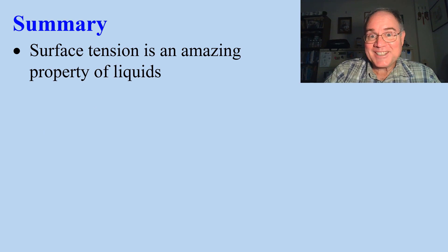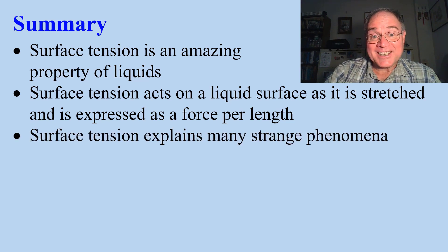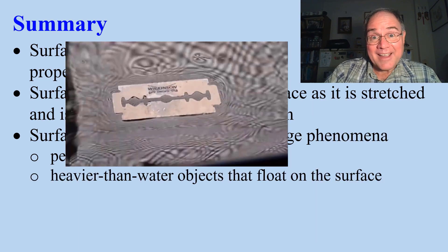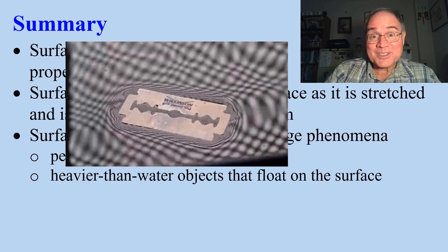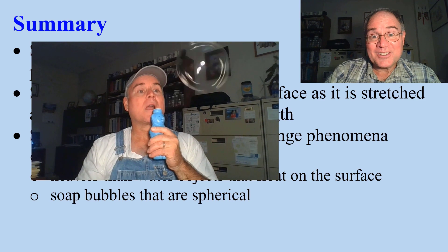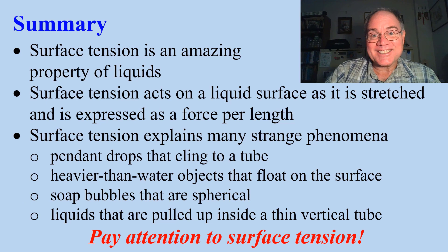In summary, surface tension is an amazing property of liquids. Surface tension acts on a liquid as it is stretched and is expressed as a force per length. It explains many strange phenomena: pendant drops that cling to a tube, heavier-than-water objects that float on the surface, soap bubbles that are spherical, and liquids that are pulled up inside a thin tube. Pay attention to surface tension.